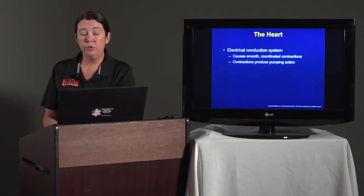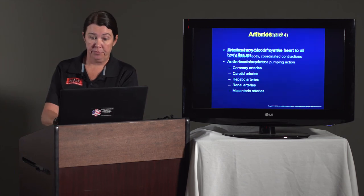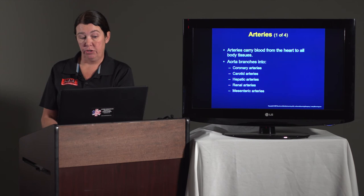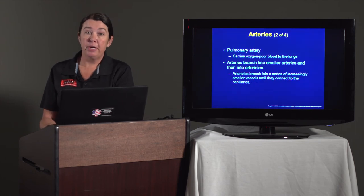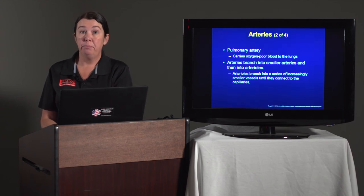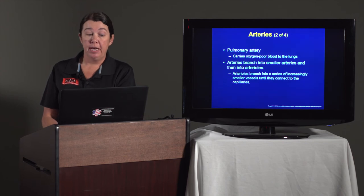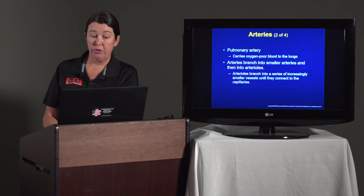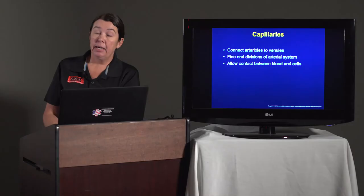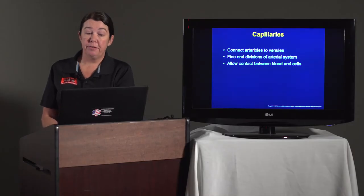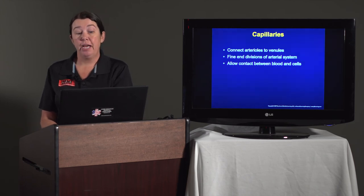The electrical conduction system causes smooth coordinated contractions of the heart, producing a pumping action so that blood is pumped through the body. Arteries carry blood from the heart to all body tissues, branching into different arteries that feed blood to parts of the body. The pulmonary arteries specifically carry oxygen-poor blood back to the lungs. Arteries branch into smaller arteries and then into arterioles, which branch into increasingly smaller vessels until they connect to the capillaries where the exchange of blood happens. A pulse is palpated most easily in the neck, wrist, or groin, created by a forceful contraction of blood out of the ventricle.